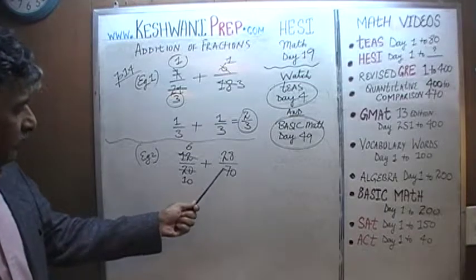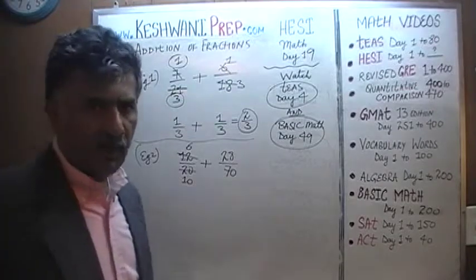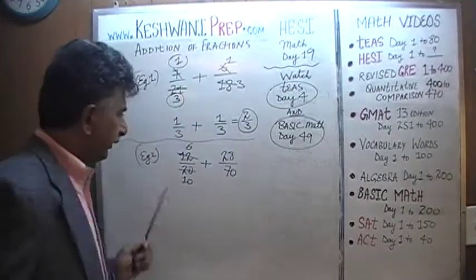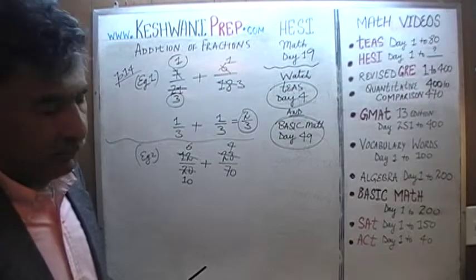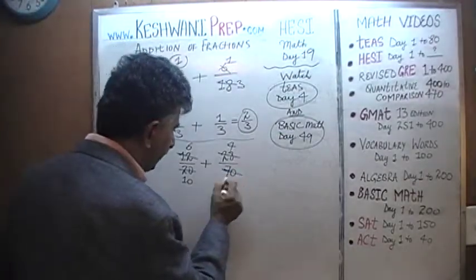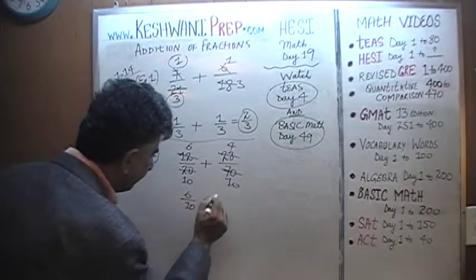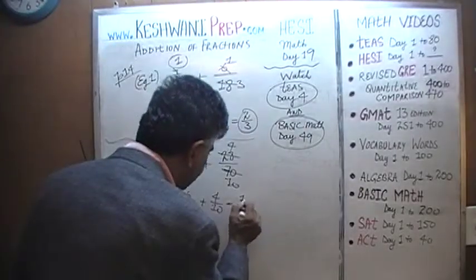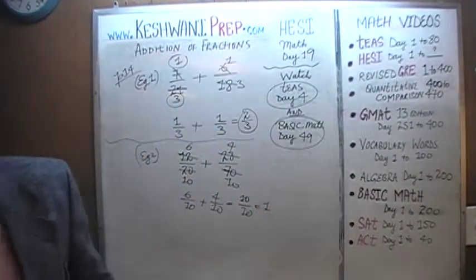Similarly, we see 28 and 70, which have a common factor of 7. Let's divide top and bottom by 7: 28 divided by 7 is 4, and 70 divided by 7 is 10. So what we end up with is 6 tenths plus 4 tenths, which is 10 tenths. That's just 1. The answer is simply 1.